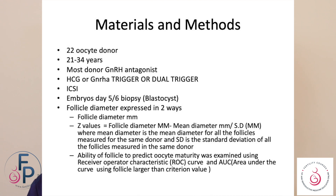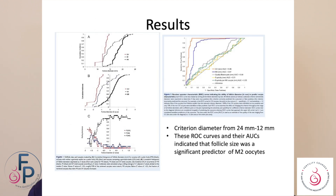This was then plotted on an ROC curve with the area under the curve using follicles larger than a criterion value. The criterion diameter varied from 12 to 24 millimeters. In general, this told us there was a very good predictor value between follicle size and metaphase II, or oocyte maturity.